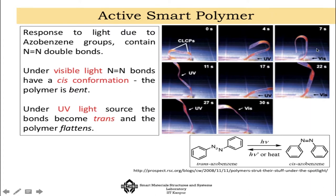Once again under visible light it will start to bend, and if UV light is applied at the next joint it will get flattened, and under visible light bending starts again. This whole ring can make its movement from one side to the other by successively making its joints transform between cis and trans configuration. This is an interesting case of an active smart polymer.